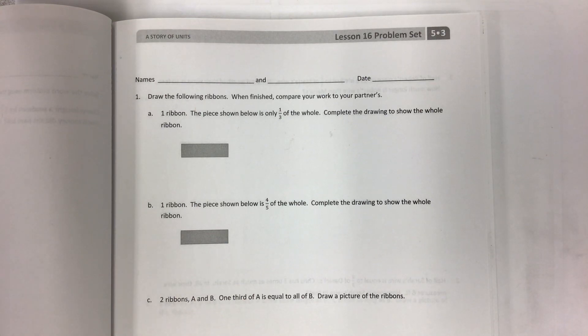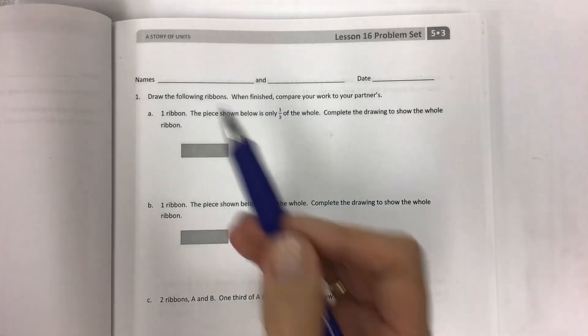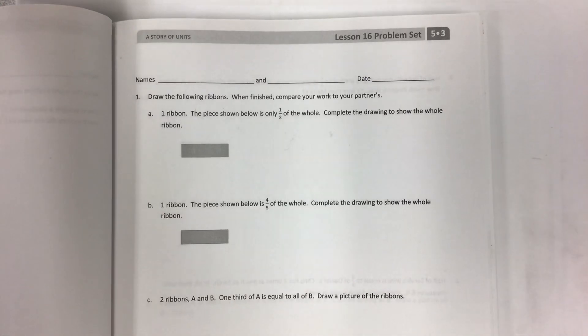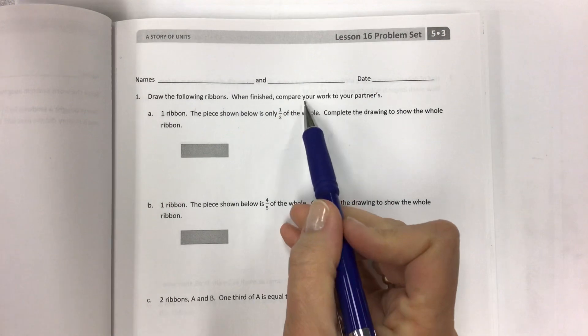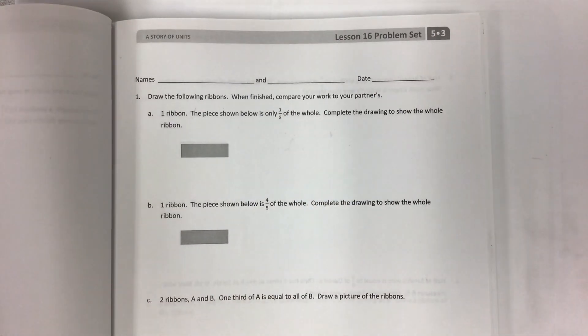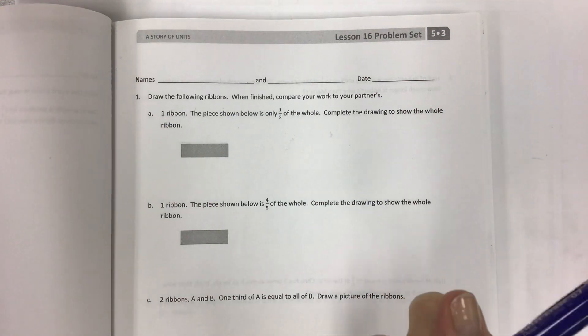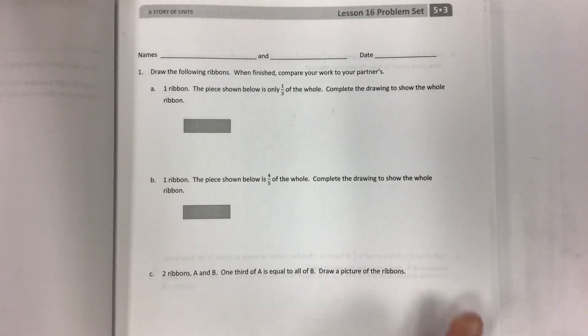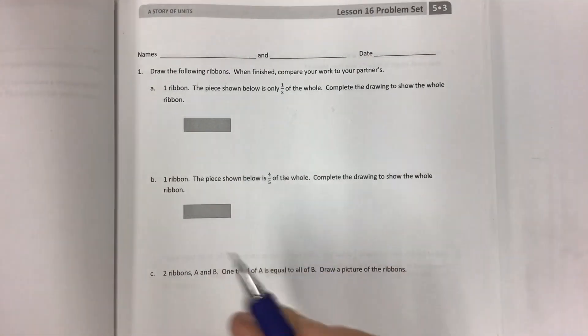The objective for today is to explore part-to-whole relationships. The directions say draw the following ribbons, and it looks a lot like a tape diagram. When finished, compare your work to your partner's. It's nice when you're in class because you can compare them, and your partner's will be completely different. We learn a lot from our mistakes.